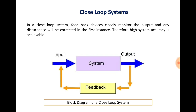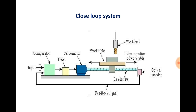Now this is the closed loop system. Here you can see the block diagram of a closed loop system. A system receives input at one end and produces output at the other end. That output is sensed by the feedback mechanism, which sends feedback to your input device. In a closed loop system, feedback devices closely monitor the output, and any disturbance will be corrected in the first instance, therefore high system accuracy is achievable. The feedback mechanism senses the output and provides feedback to the input. This is similar to the open loop system — the only difference is that here you get a feedback signal.